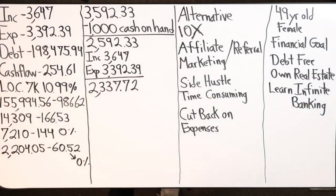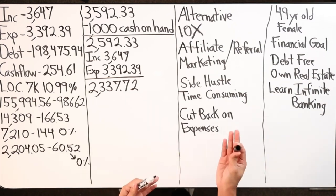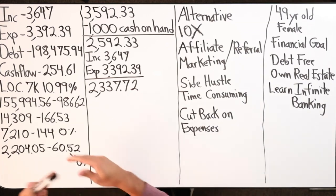Here's an example of a client like that where I'm putting them on the spot. This is where we started off: income is $3,647, expenses are $3,392.39, total debt is just under $200,000, cash flow $254.61. They do have a personal line of credit for $7,000 at 10.99%, and this is with the same bank that I have a line of credit with, Bright Star Credit Union.